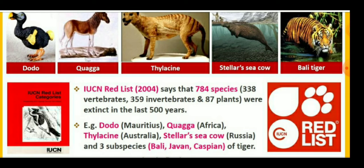Examples of extinct species include the dodo, quagga, thylacine, Steller's sea cow, and various species of tigers. Three subspecies of tiger which are now extinct are the Bali tiger, Javan tiger, and Caspian tiger.